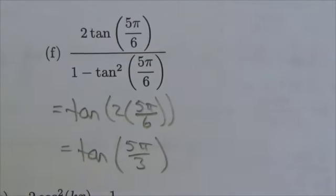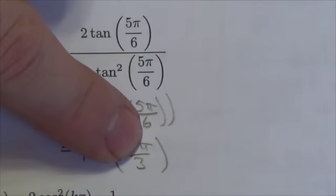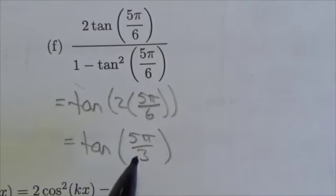Okay. Now, 5π over 3. Let's just think about that. The reference angle here is going to be π over 3. Okay. We just ignore the coefficient in the numerator. 5π over 3. Okay. Let's just talk about that.